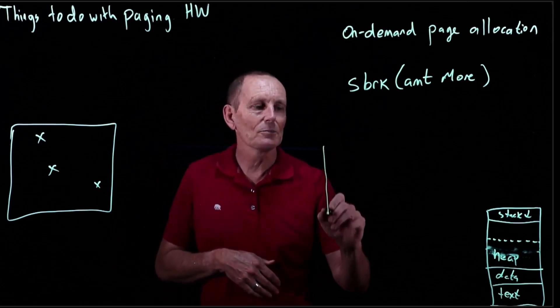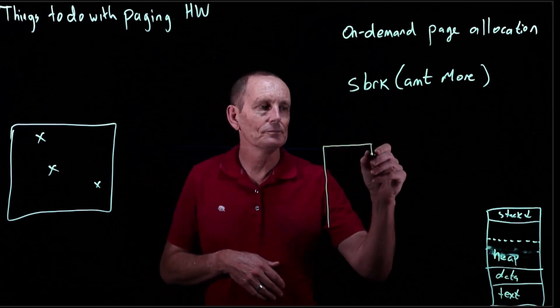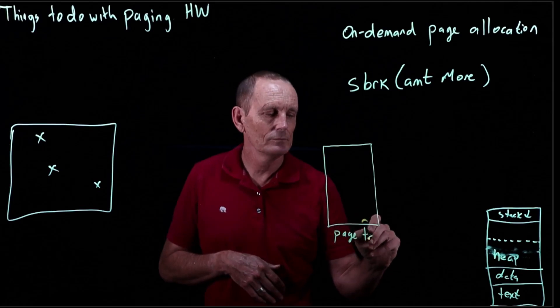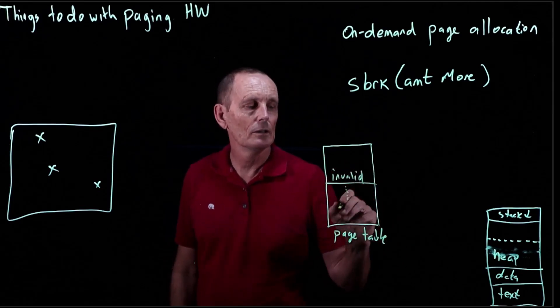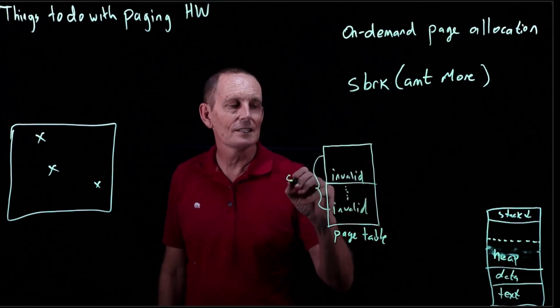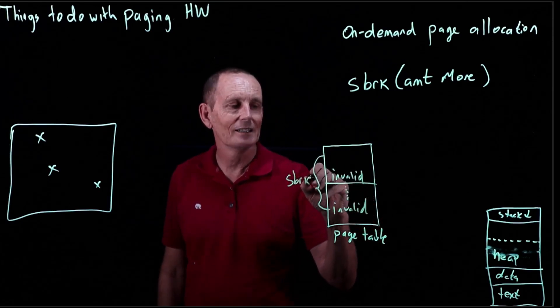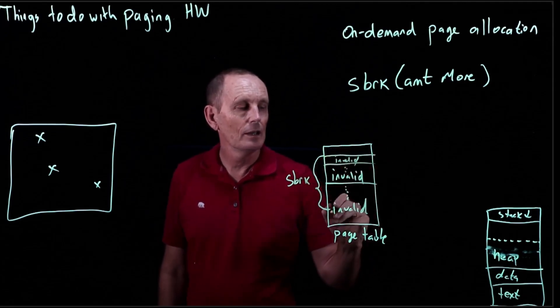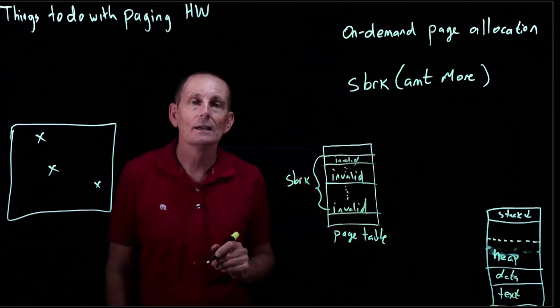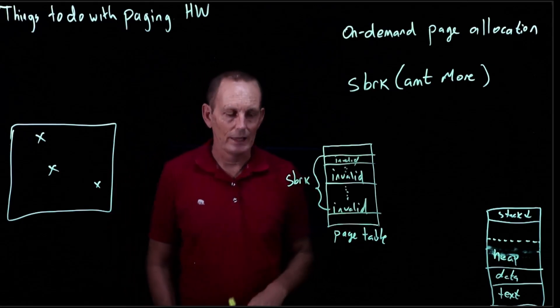But in our corresponding page table, we mark all those... So let's say this is the amount that the user s-braked, that's the amount they asked for. And so we make every corresponding page table entry invalid.